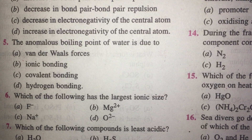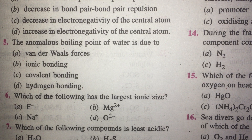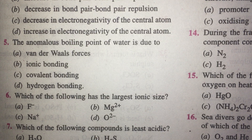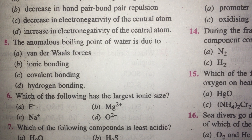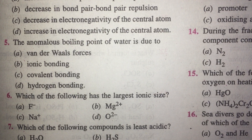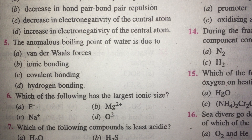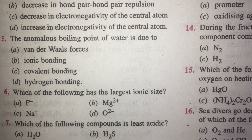Which of the following has the largest ionic size? Always remember: positive ions are smaller, negative ions are larger. The more negative the charge, the bigger the size. So the answer is D — the oxide ion, which has the highest negative charge.